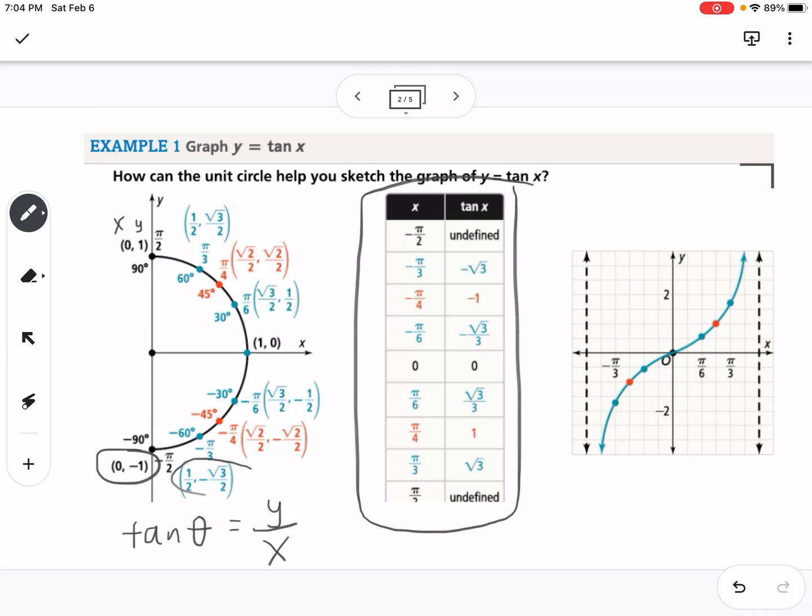Negative pi over 3 is negative square root of 3 over 2 over 1 half. So if we think about negative square root of 3 over 2 over 1 half, the denominators cancel, and we're ending up with negative square root of 3, so that's where that came from.